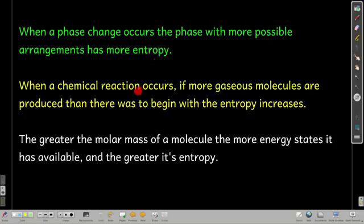When a chemical reaction happens, sometimes there are more gaseous molecules on one side of the arrow than the other. If the products have more gaseous species than the reactants, then you've increased the entropy; if they have fewer, then you've decreased the entropy. Finally, the more massive molecule — the greater the molar mass — the more energy states it has available and the greater its entropy.